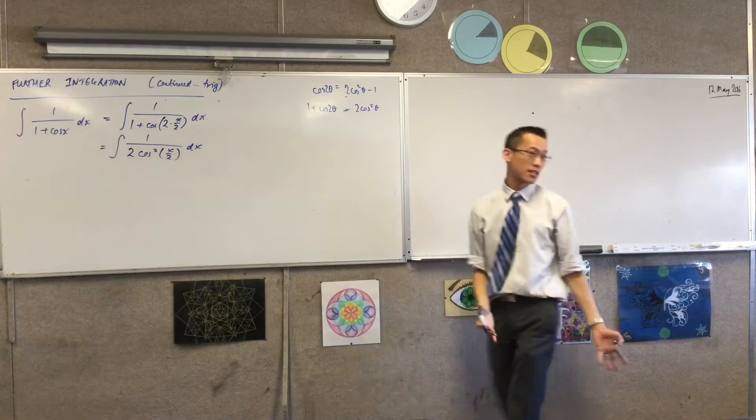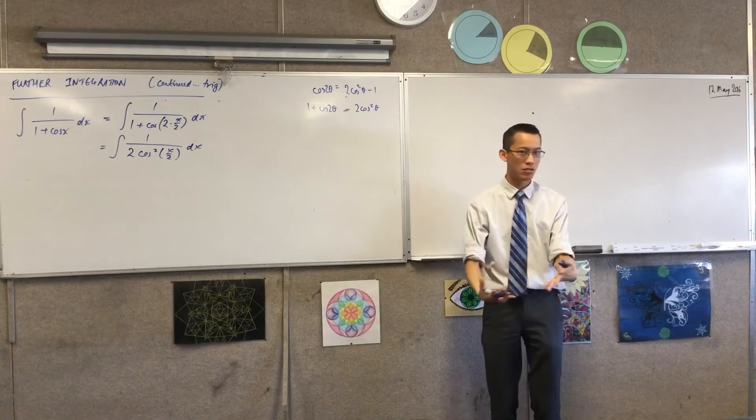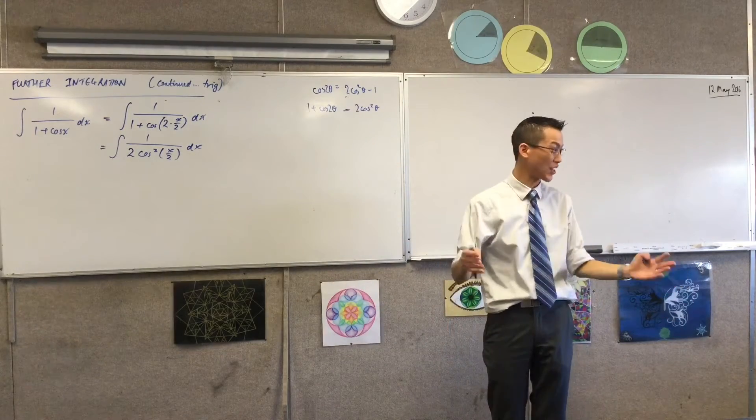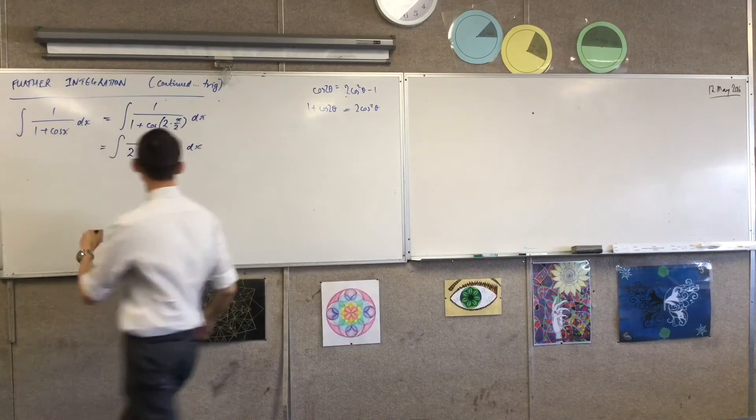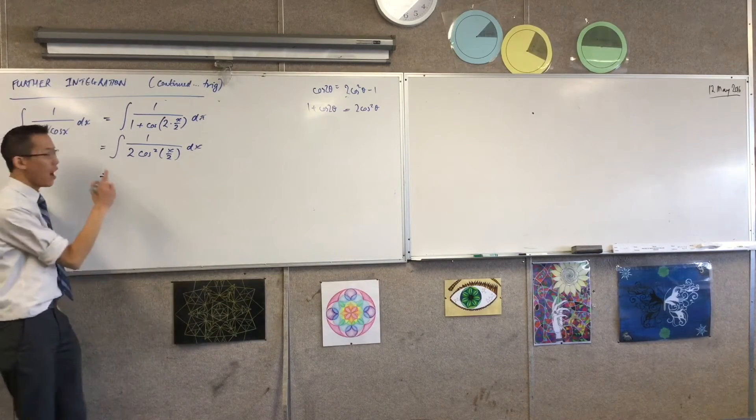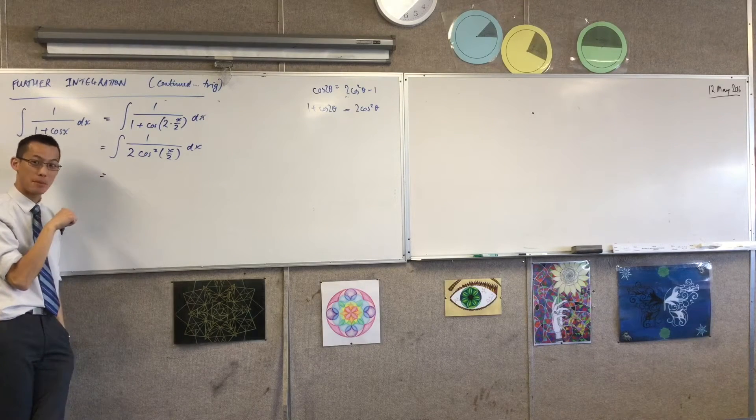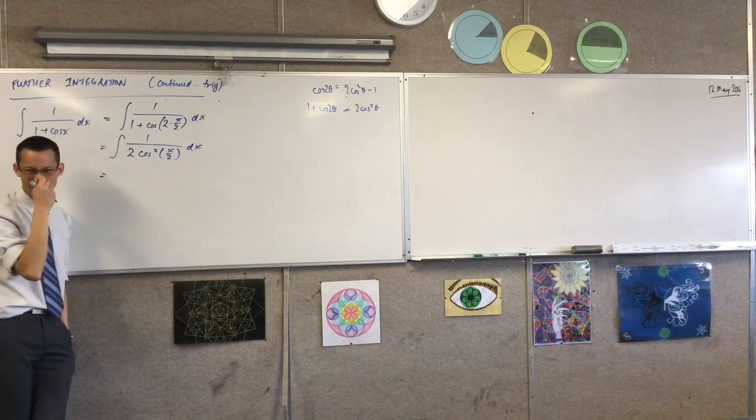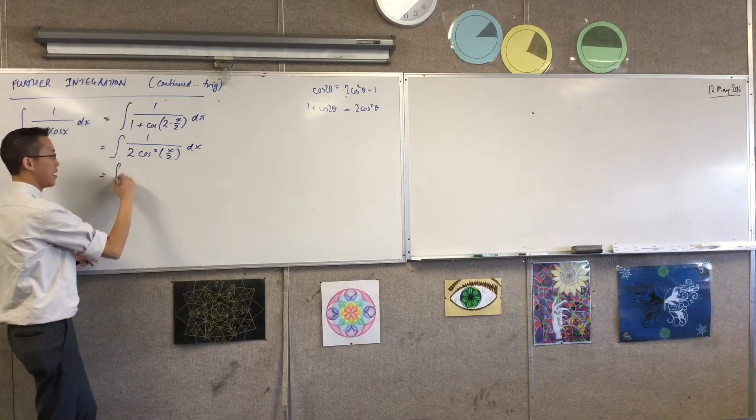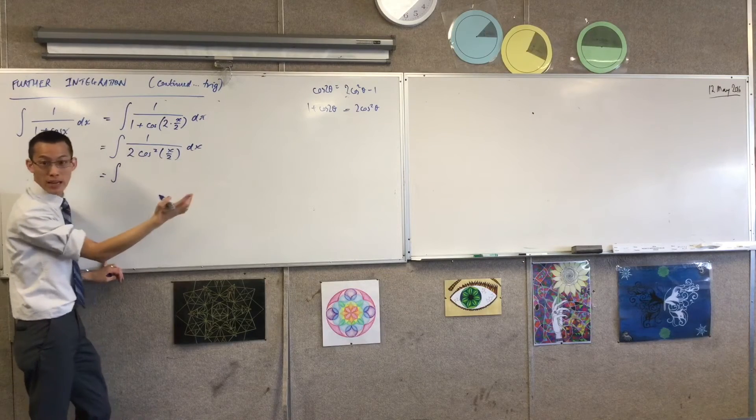So I'm going to do my substitution over here. 1 plus cos 2 theta is 2 cos squared theta, in which, for this case, is x on 2. Now that's the hardest part of this, recognizing there's an identity there which is not at all obvious, and that's part of what extension 2 is about. Now that I've got 1 over cos squared, that's still a bit of a mess. How could I write that in a form that would make it easier for me to integrate? It's sec squared, isn't it? So when I see that would be sec squared, see how there's an x on 2 there? That means it's reverse chain rule.